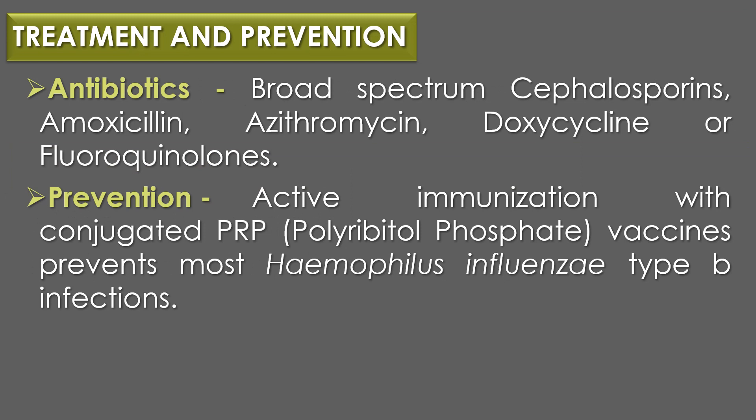Treatment and Prevention: Haemophilus influenzae infections are treated with broad-spectrum cephalosporins, amoxicillin, azithromycin, doxycycline, or fluoroquinolones. Susceptibility to amoxicillin should be documented. Active immunization with conjugated PRP (conjugated polyribitol phosphate) vaccines prevents most Haemophilus influenzae type B infections in children.